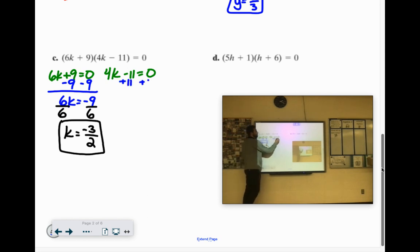4k minus 11 equals 0. We'll add 11. 4k equals 11. And we'll divide by 4. You can't simplify 11 over 4, so you just leave it.